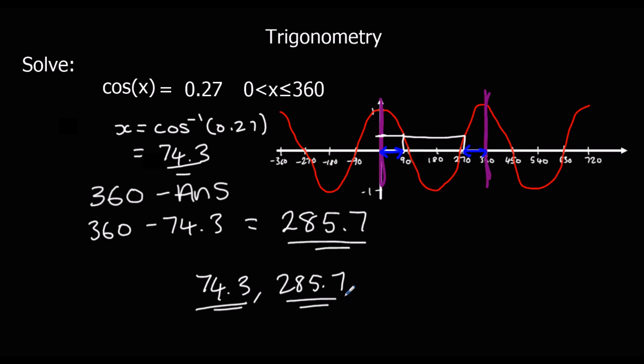Those are our first two answers. The question specifically said between 0 and 360, so there are only those two answers in that range. If we wanted to generate more, we'd just add 360 to both of them or subtract 360 from both of them.